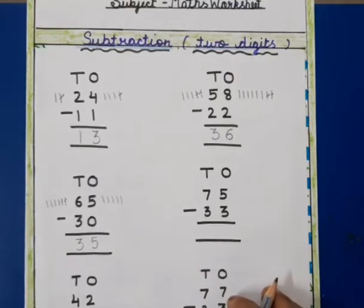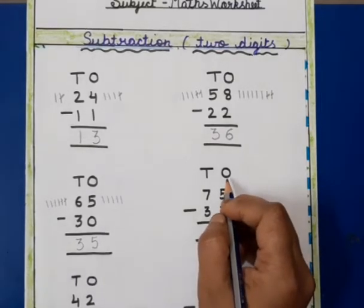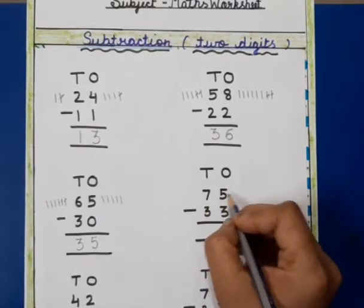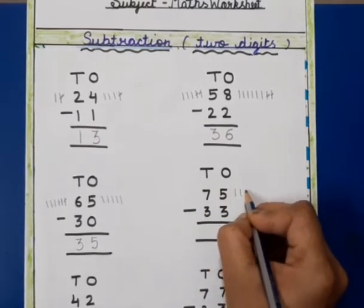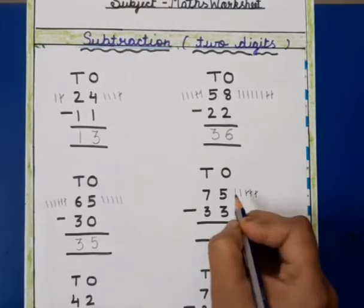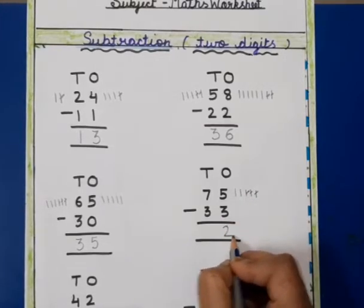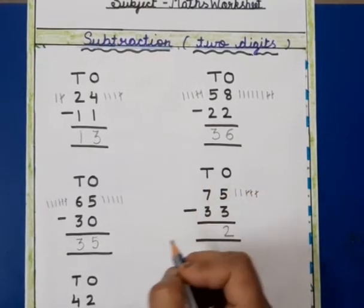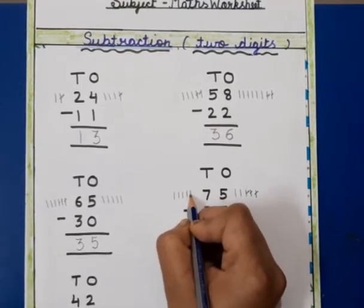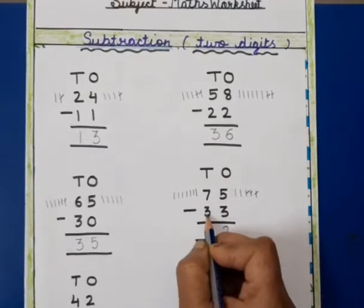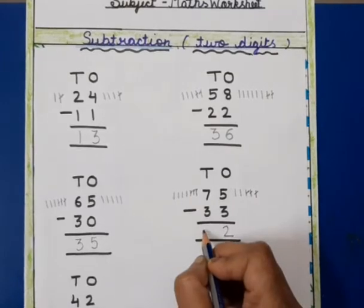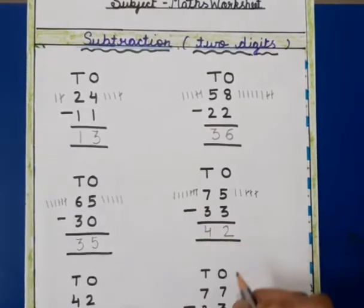This is ones and tens. First of all we will solve ones. This is 5, we will draw five lines. This is 3, we will cut three and we will get two. We will write 2 here. Now this is tens and this is 7. We will draw seven lines and we will cut three, and we will get four. So we will write 4 here.